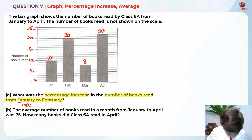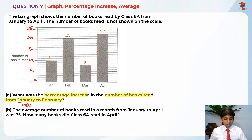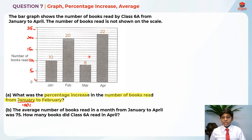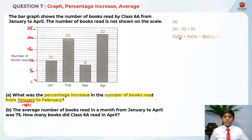So it's shown on the graph: January is 10, February is 20, March is 8, and April is 22. They're asking the percentage increase from January to February. January — 10 units — is the base, which equals 100%. The increase is 10 units. So we take 10 over 10 times 100%, which gives us 100%. So 100% is the answer for Part A.